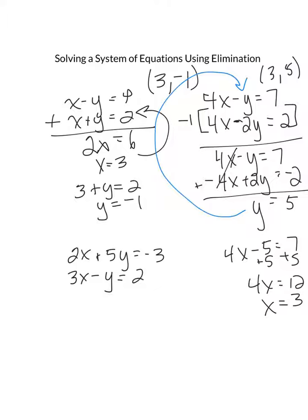This last one here, we can't just add them together because the two variables are not going to cancel. We can't just multiply by a negative 1. We actually have to multiply, and I'm going to do the second equation by a 5 because I'm looking at this column here and I'm going to eliminate my y's.